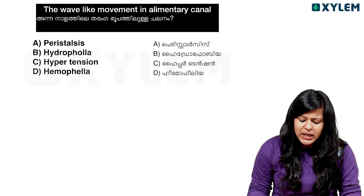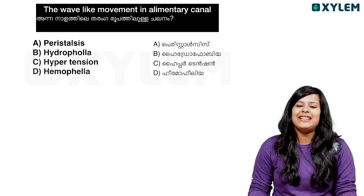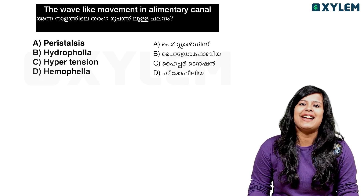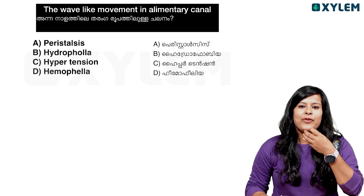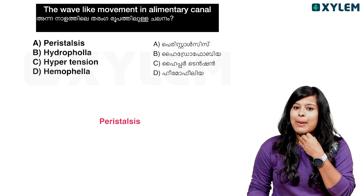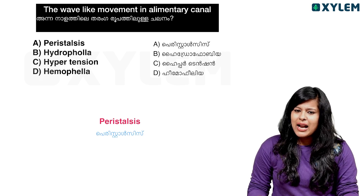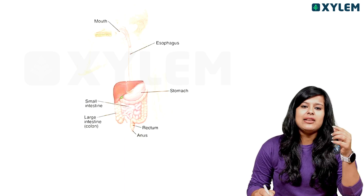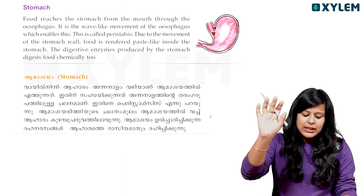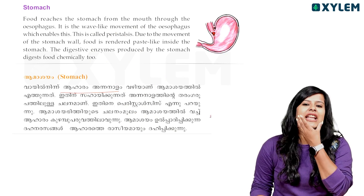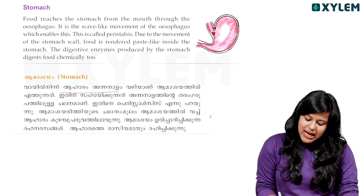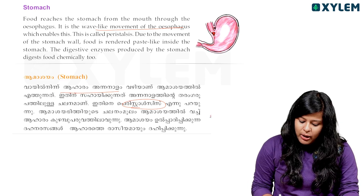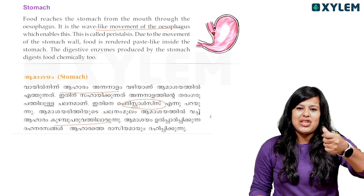Next question: The wave-like movement of an alimentary canal. The options are: Peristalsis, Hydrophobia, Hypertension. The wave-like movement of the esophagus which enables food to move — this is called peristalsis. We go from the mouth to the stomach, then the bone, then the rectum, and then to the food.